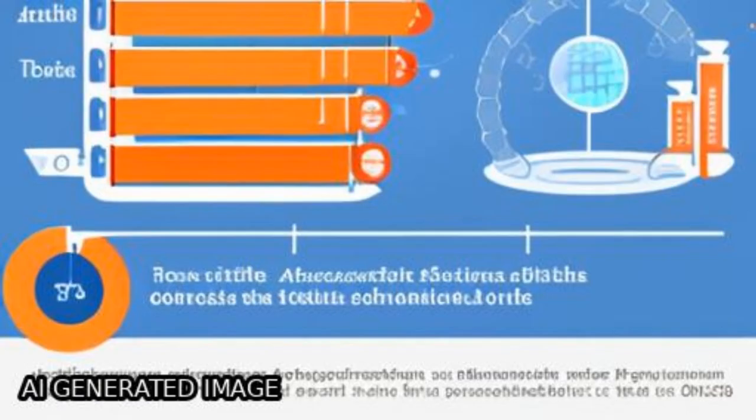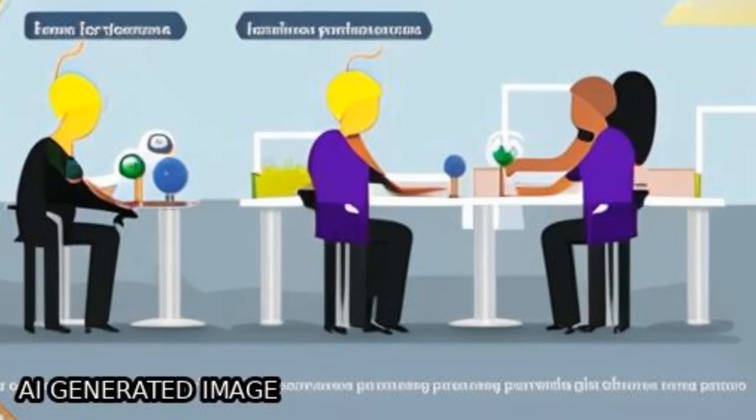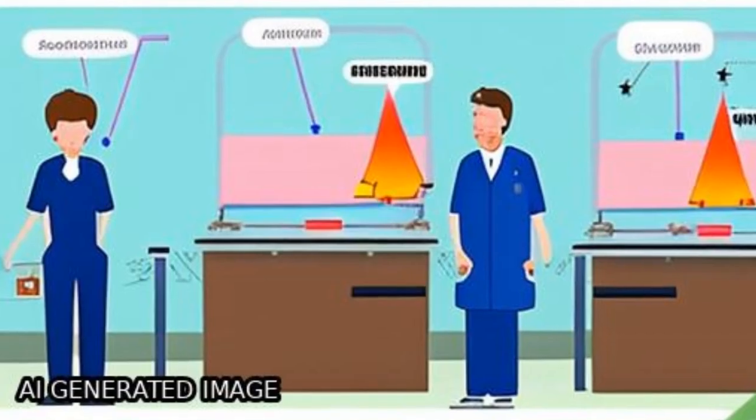The study also found that the BDI-21 and NA subscale were negatively correlated with age and partner's age.